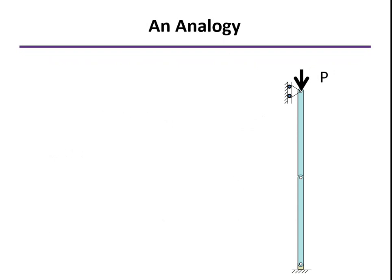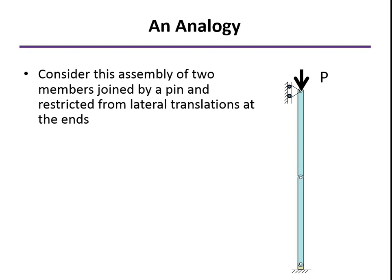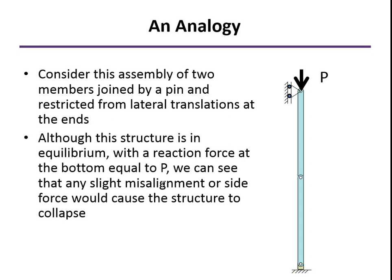We're going to take a look at an analogy here before we try to derive the buckling equation for a column. Instead of a column, let's use two rigid lengths that are joined together by a pin joint in the middle. It's also pinned at the top and the bottom as well, so at the top and bottom it cannot move laterally. We're going to put the force P, an axial force in compression here. If we look at this structure the way it is, we'd say it's in equilibrium. That force P will be reacted by an upward force P at the bottom. However, we can see that any slight misalignment would create a moment that would cause this to not be in equilibrium. Because of that, we say that this structure is unstable. It is in equilibrium, but any slight disturbance would cause that to go out of equilibrium and would cause the structure to collapse.